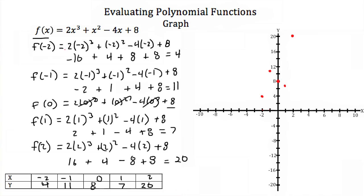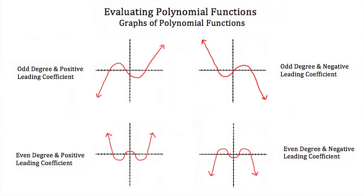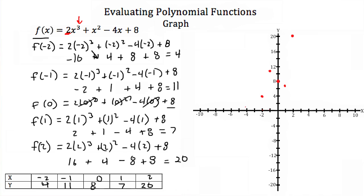Now let's look at our function. Here we have an odd degree and a positive leading coefficient. Remember, when we have an odd degree and a positive leading coefficient, we're going to get a graph that starts low and ends high. So let's try to connect these points with a smooth curve that starts low and ends high. And that's how you graph a polynomial function.